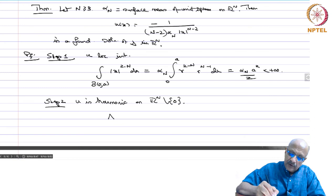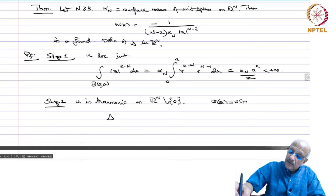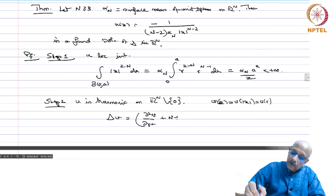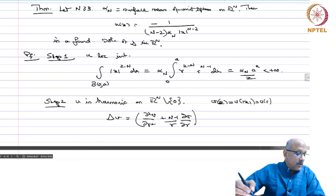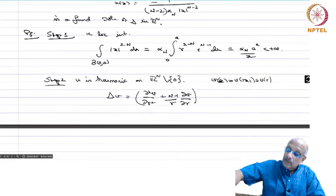For a radial function v(x) = v(|x|) = v(r), the Laplacian is Δv = d²v/dr² + (n−1)/r · dv/dr. Substituting u(r) = −1/((n−2)α_n) · r^{2−n} and computing gives Δu = 0 in ℝⁿ \ {0}.